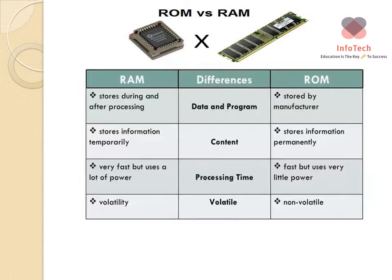Regarding volatility, RAM is volatile and ROM is non-volatile. This means that for RAM, data can be changed, however for ROM the data cannot be changed — except for PROM, where you can erase and reprogram the information, and EEPROM, where you can reprogram it by applying electrical pulses to it.